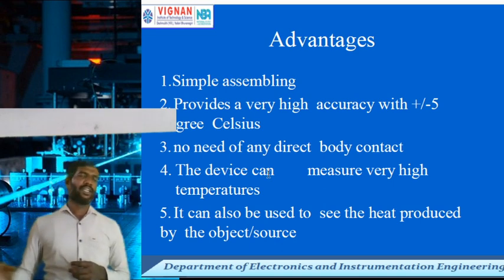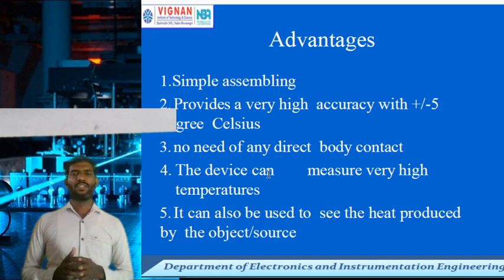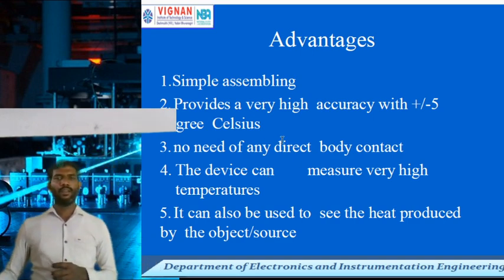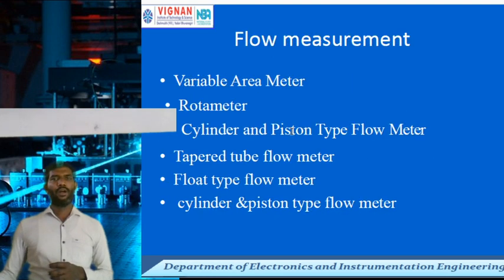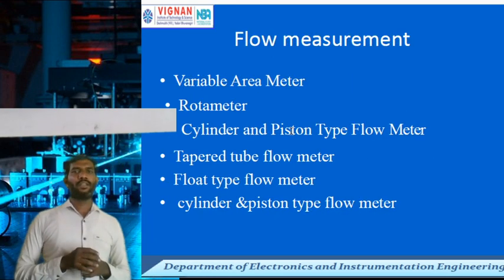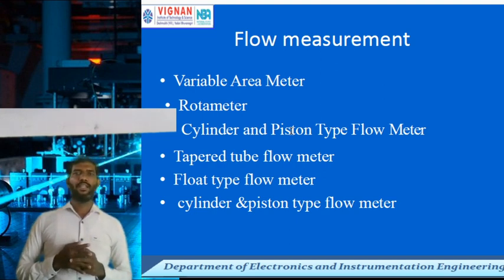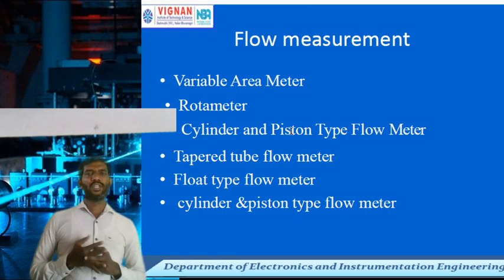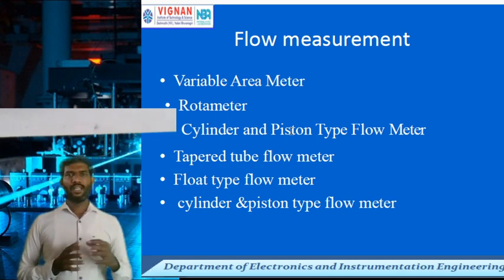Radiation pyrometers are especially used in blast furnace temperature measurement. In the last chapter, we briefly discussed flow measurement. In flow measurement, especially for the paper and pulp industry, the rotameter and cylinder-and-piston type flow meters are used. Flow meters are classified into different types under variable area flow meters, including rotameter, cylinder and piston type, taper tube flow meter, and float type flow meter. These will be discussed in the next video.